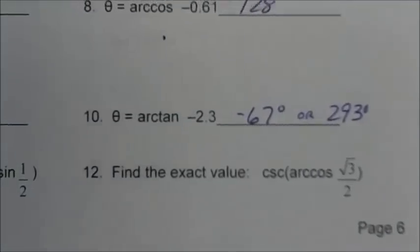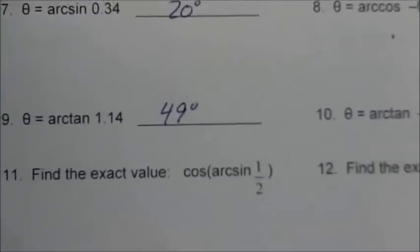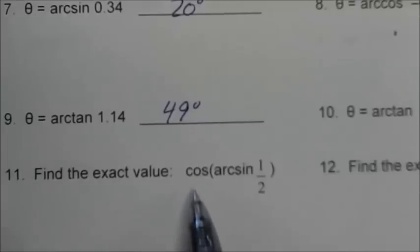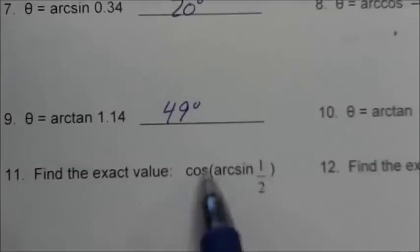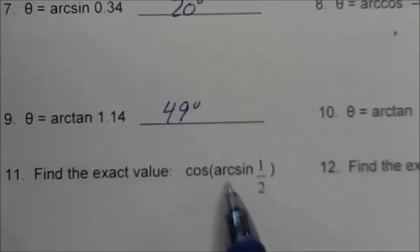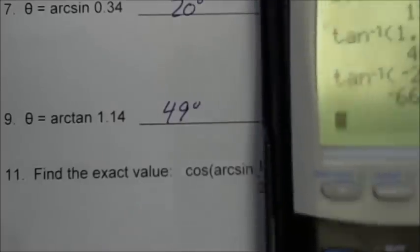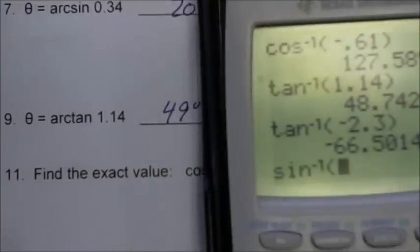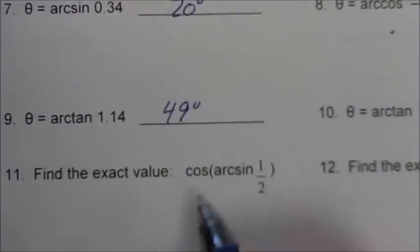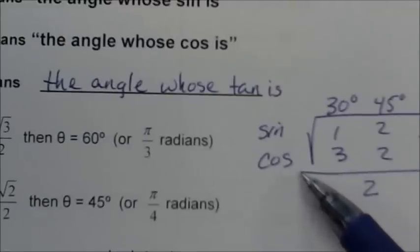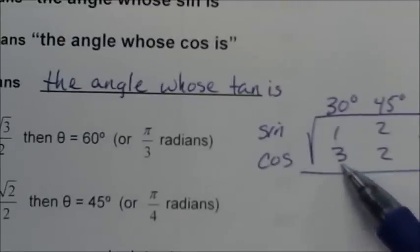Numbers 11 and 12 ask for exact value. Find the exact value of the cosine of arc sine of 1 half. So we're looking for the cosine of the angle whose sine is 1 half. Let's do what's inside the parentheses first — one angle has a sine value of 1 half. 2nd sine, 1 half — that's 30 degrees. So we're looking for the cosine of 30 degrees, which from our trick table is the square root of 3 over 2.